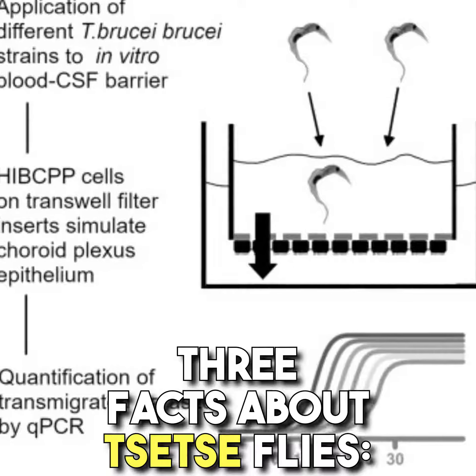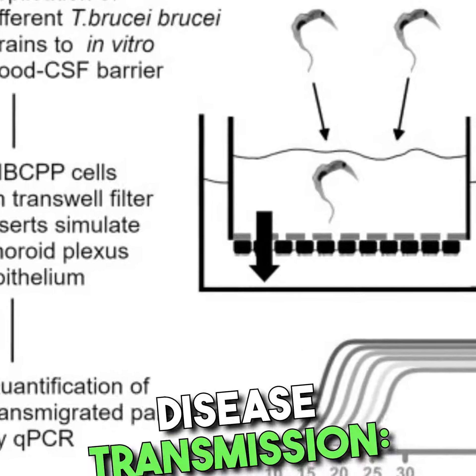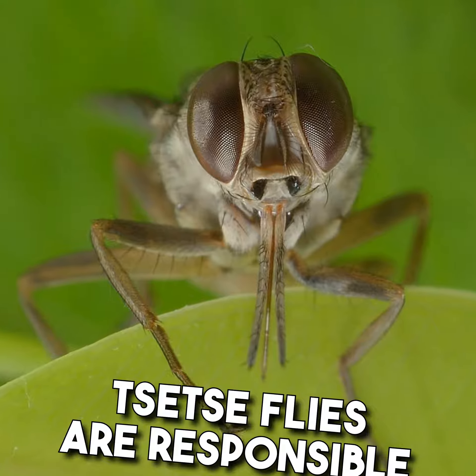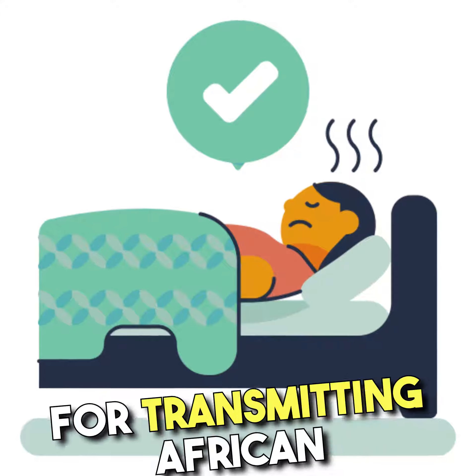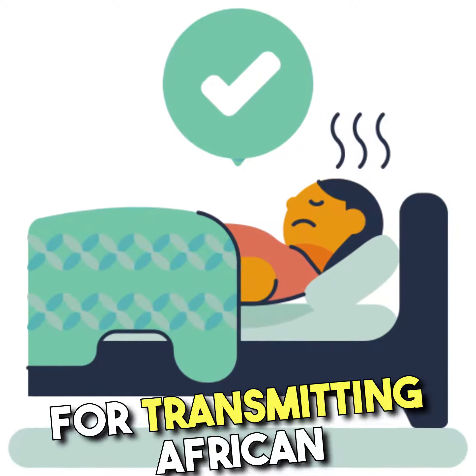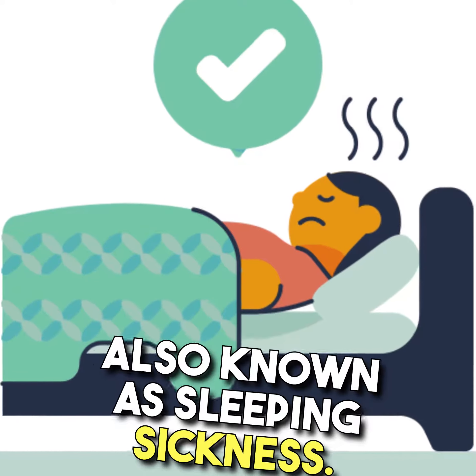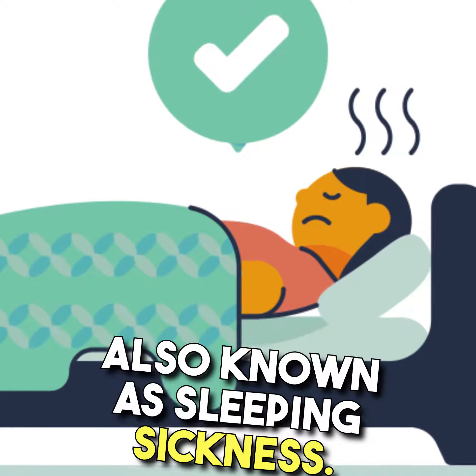Three facts about tsetse flies. Fact one: disease transmission. Tsetse flies are responsible for transmitting African trypanosomiasis, also known as sleeping sickness.